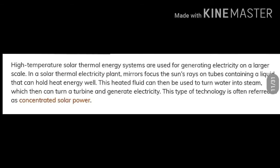High temperature solar thermal energy systems are used for generating electricity on a larger scale. In a solar thermal electricity plant, mirrors focus the sun rays on tubes containing a liquid that can hold heat energy well. This heated fluid can then be used to turn water into steam, which can then turn a turbine and generate electricity. This type of technology is often referred to as concentrated solar power.